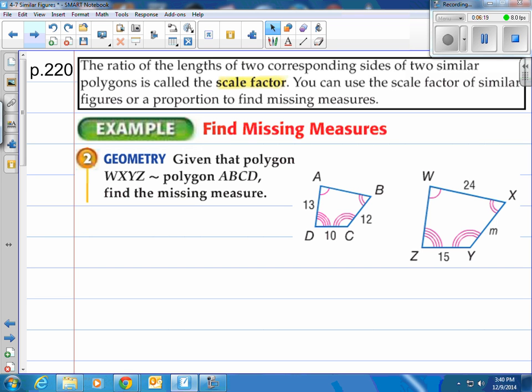The ratio of the lengths of two corresponding sides of two similar polygons is called the scale factor. You can use the scale factor of similar figures or a proportion to find missing measures. Take a look at our first example here. We're going to find this missing length called M. It says, given that polygon WXYZ is similar to polygon ABCD, find the missing measures. You can see they've already put the arcs in there. These two figures are similar.